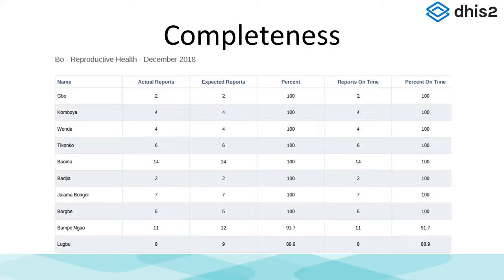Let's look at some quick examples from the real world. First, on completeness, this is the DHIS2 data set completeness app. This is a picture of some Sierra Leone generated data. You can see that looking at completeness, we have actual reports divided by expected reports, and we can see what percentage of reports are actually incomplete, as well as the number of reports that reported on time. You can quickly see completeness by different aggregation levels — national, district, regional — all the way down to individual facilities.